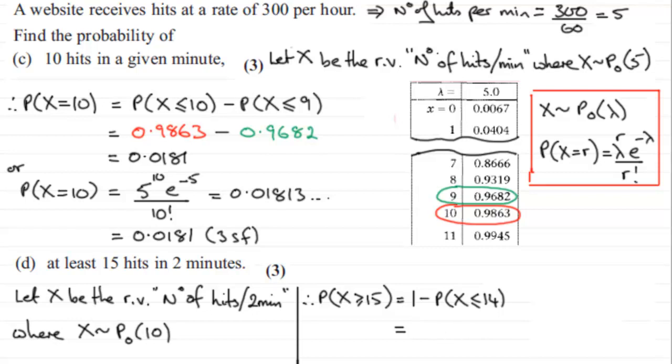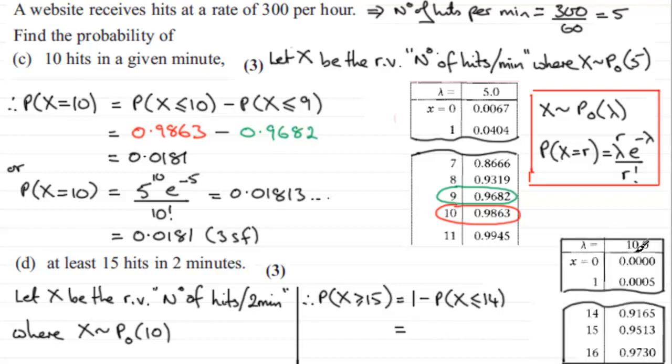So that this time when we have our tables, let's just get an extract from them here. When you look up your mean lambda equaling 10, we just want to go down the X column to 14, and you can see that there we have where X is 14.